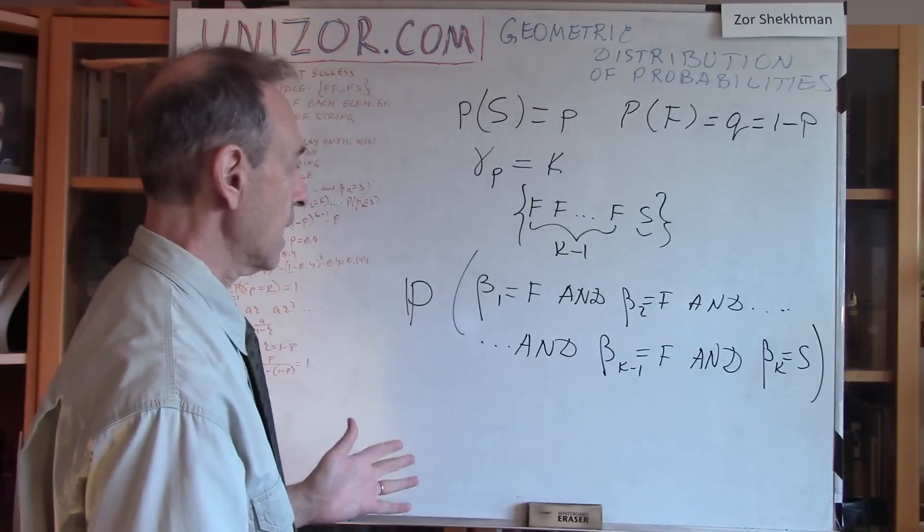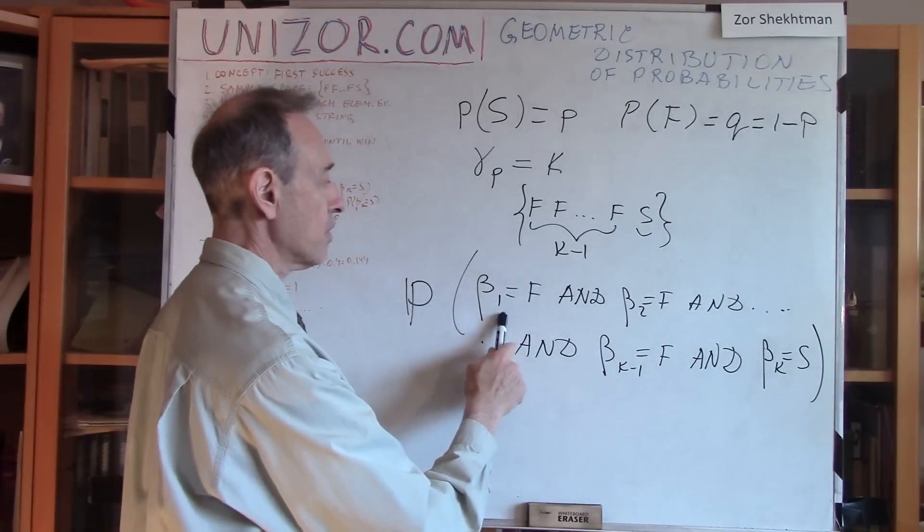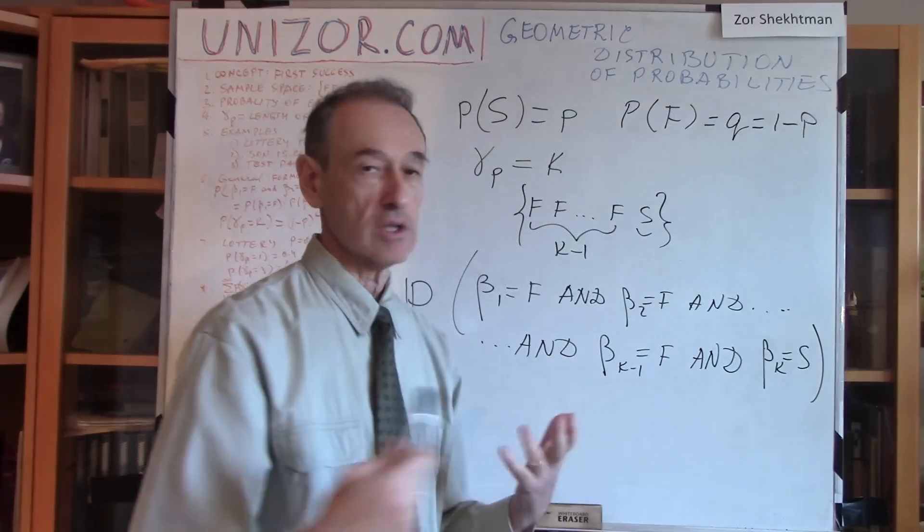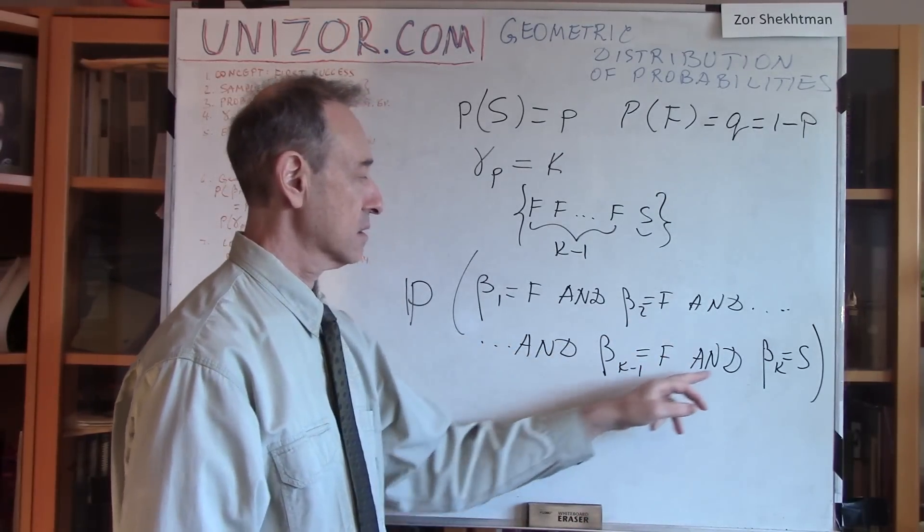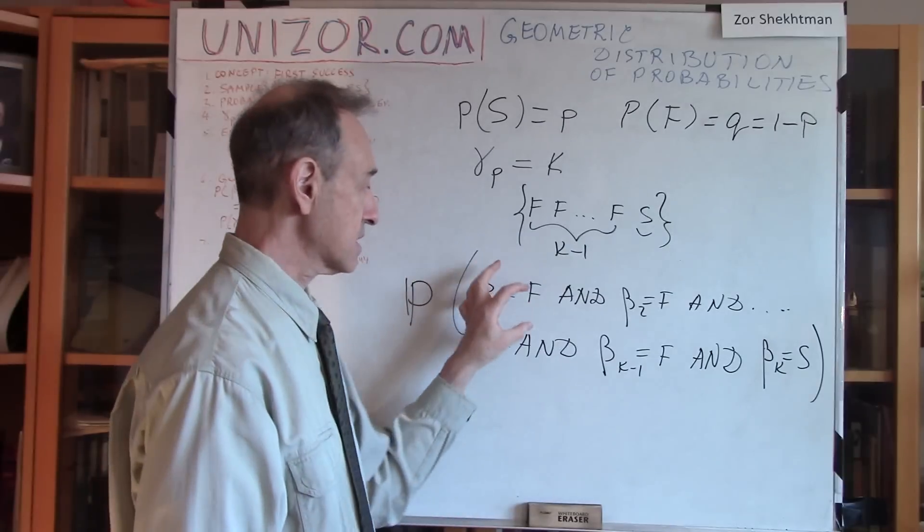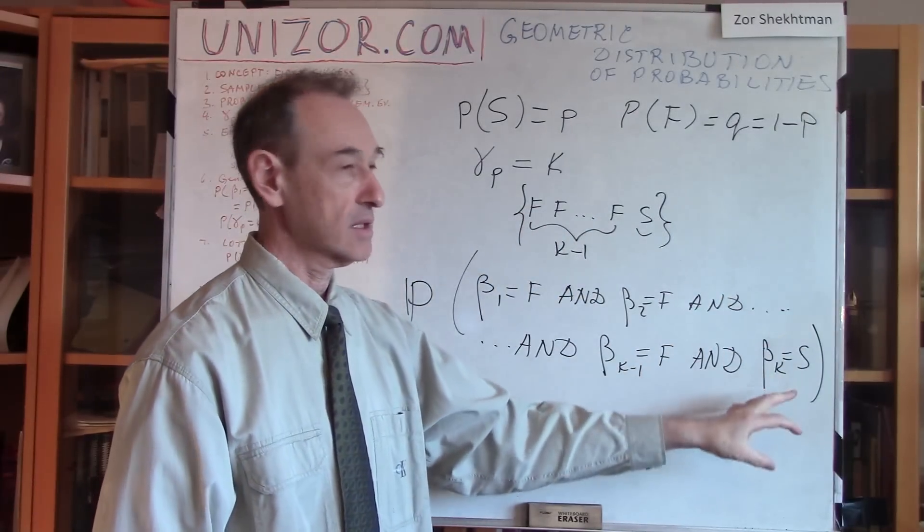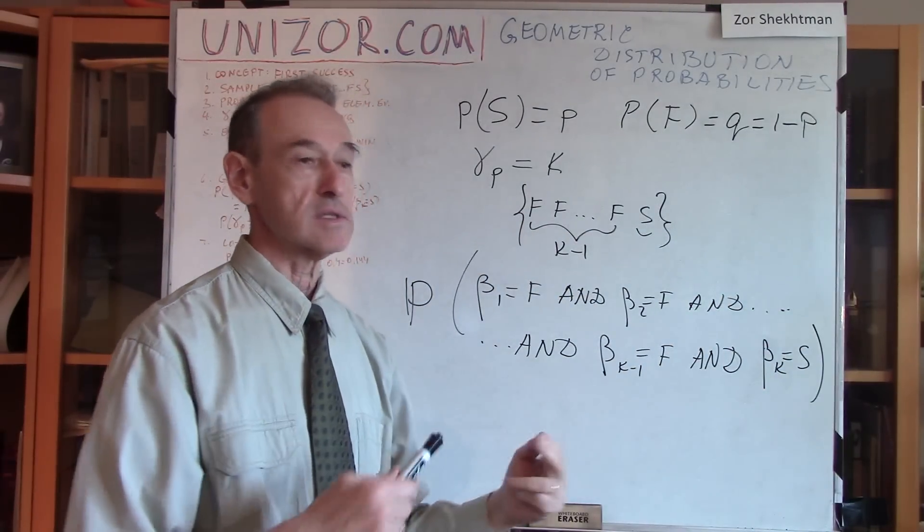And in this particular case, we know that the probability of this combination of events connected with n. So it's this event, and this event, and this event, and this event. If these events are independent, and these beta are independent,